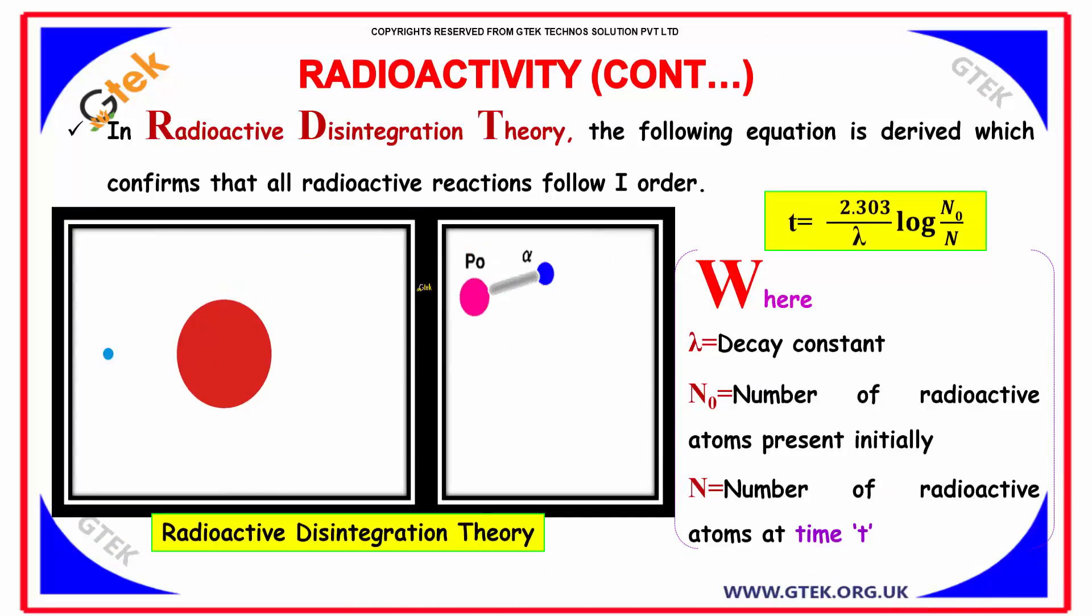In radioactive disintegration theory, the following equation is derived which confirms that all radioactive reactions follow first order. t equals 2.303 divided by lambda log of N0 divided by N.